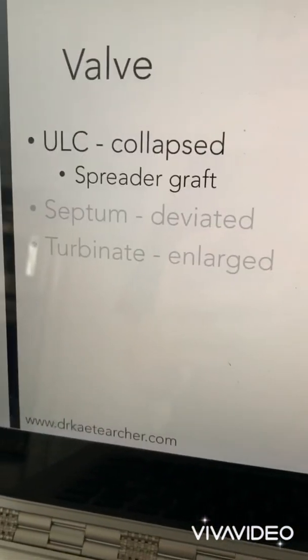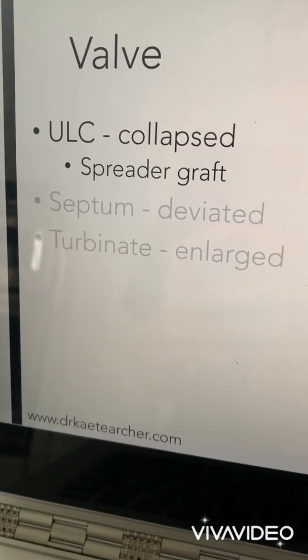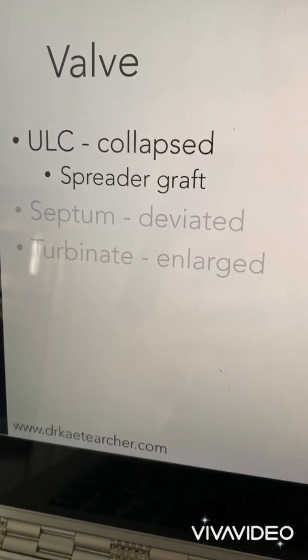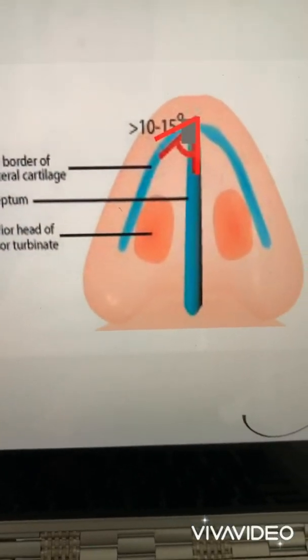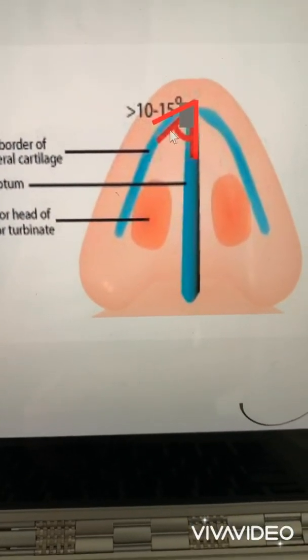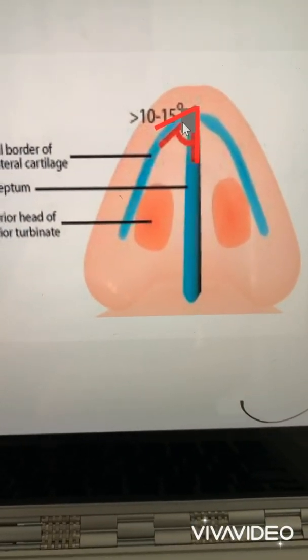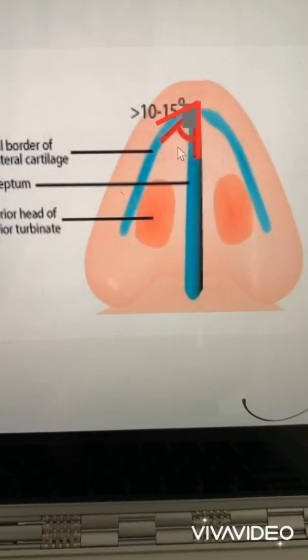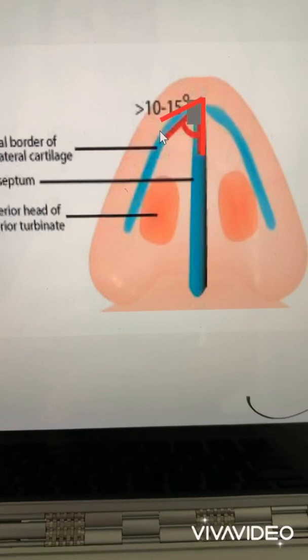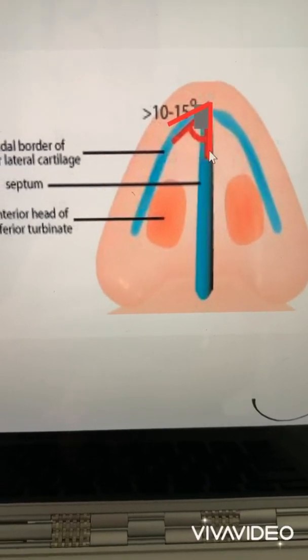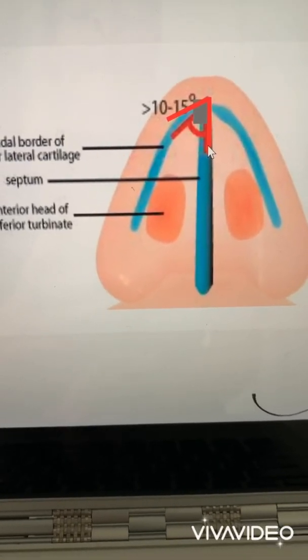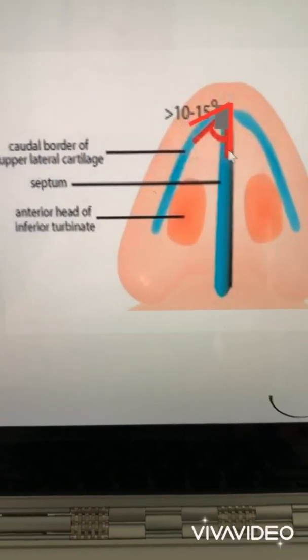Whenever the upper lateral cartilage is the problem, collapsing and pinching the valve, we perform a spreader graft. This is when a small piece of cartilage is placed between the septum and the upper lateral cartilage, effectively stenting open or widening the angle of the valve.